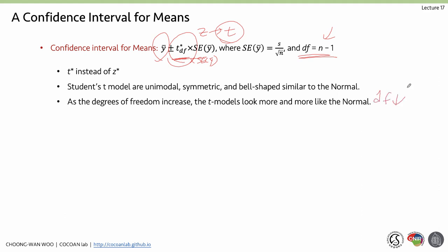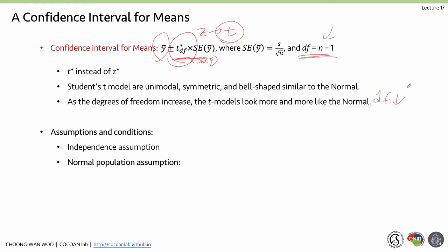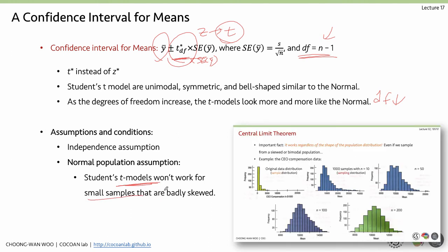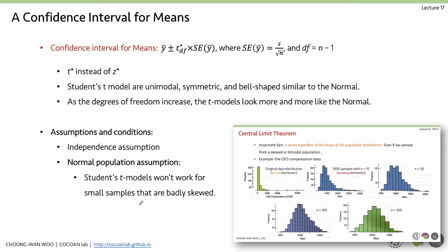The assumptions and conditions are the same as before — the independence assumption — but there is one additional assumption: the normal population assumption. Student's t will not work for small samples when the data are badly skewed. With a small degree of freedom, we need to check the distribution of the population, but we don't really know the population distribution. If the sample size is larger than 40 or 50, t-methods are safe to use in most cases. If you are certain about the distribution of the population, you can use t-methods with a small sample size as well.